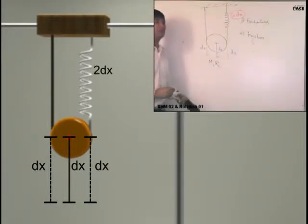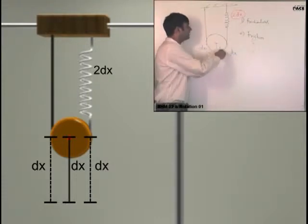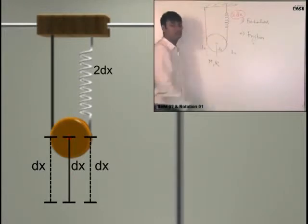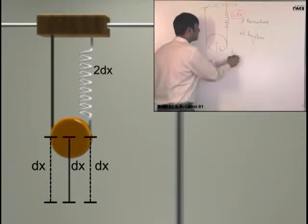Extension in the spring will be 2dx if I displace the body by dx downwards. And since there is no friction it is not, the tension is going to remain same on both sides. Yes. So I know, do I know the force now in the spring?